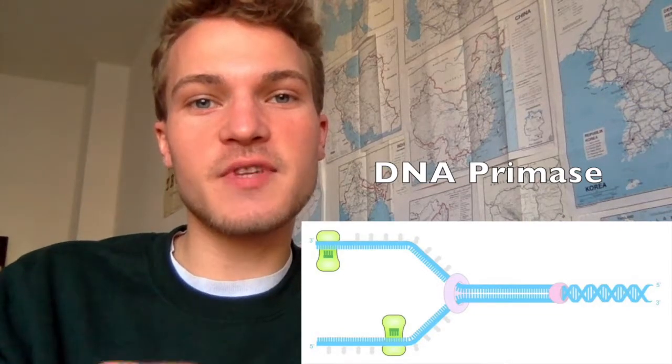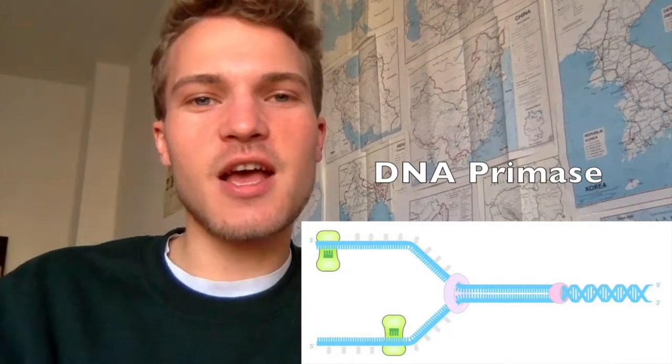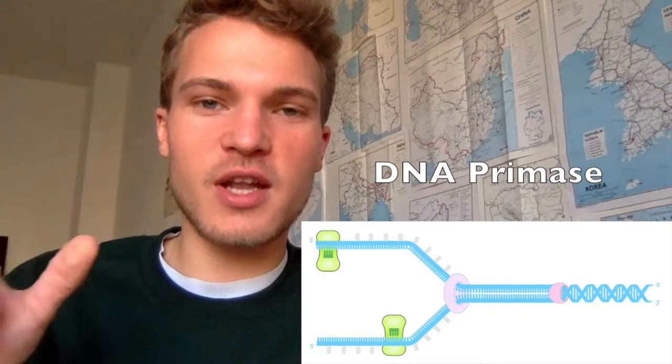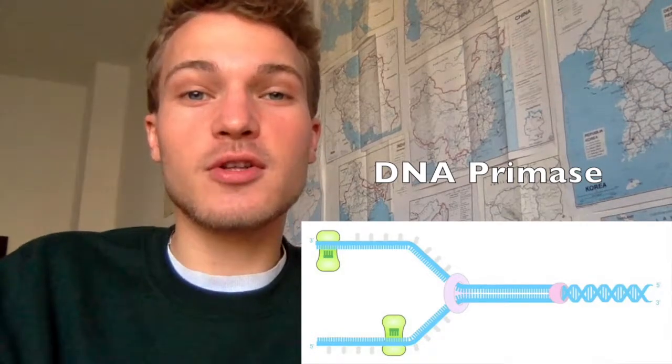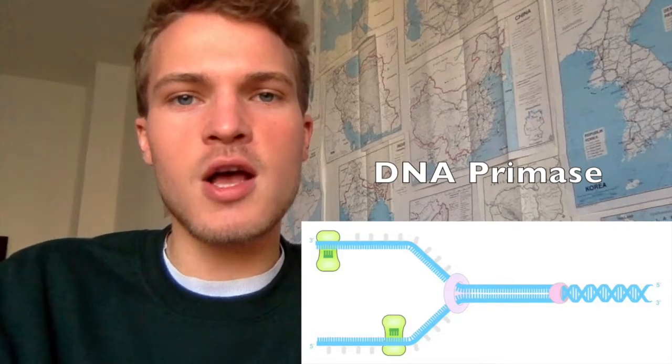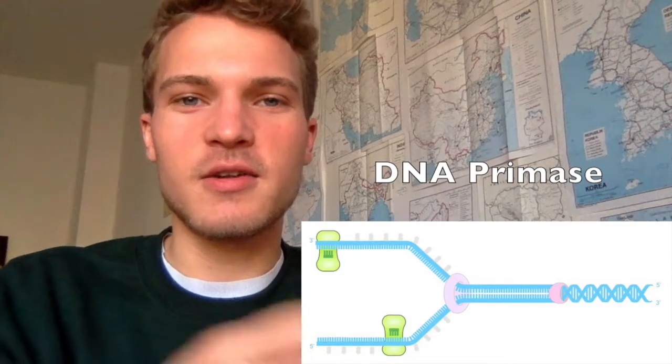DNA primase creates a so-called primer, which is the point where DNA polymerase can start replication. This primer is a 10 to 15 nucleotide-long beginning of a new strand, but it is actually an RNA primer made of RNA nucleotides. These RNA primers are where DNA polymerase can attach and begin adding DNA nucleotides for the new strand. DNA polymerase can add nucleotides but cannot initiate the process, so we need DNA primase to create this short primer — only 10 to 50 nucleotides — as the initiation point.